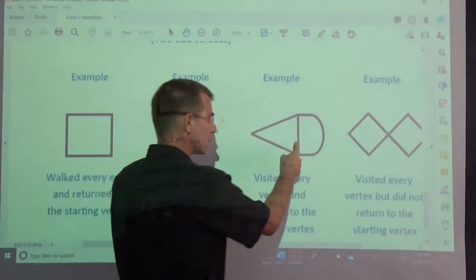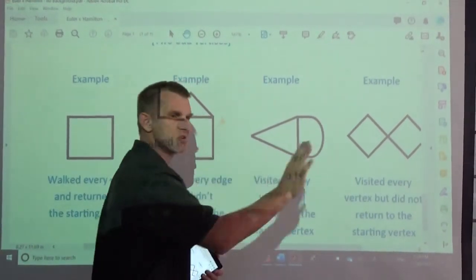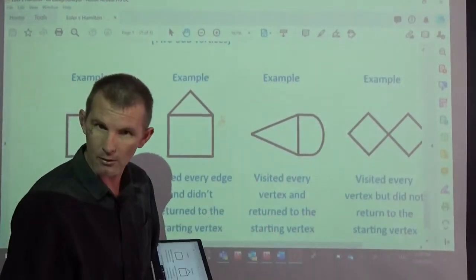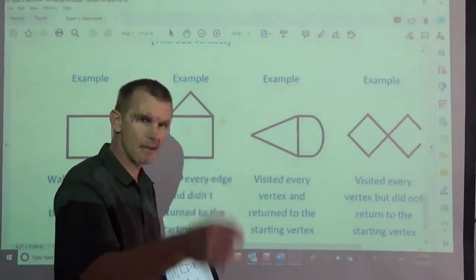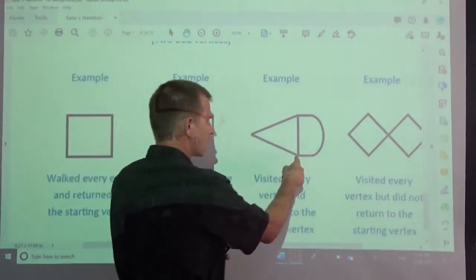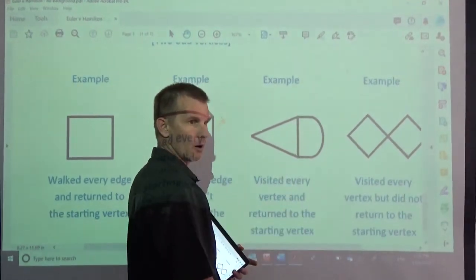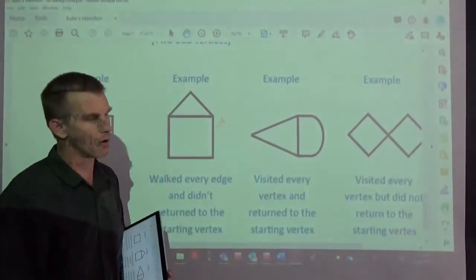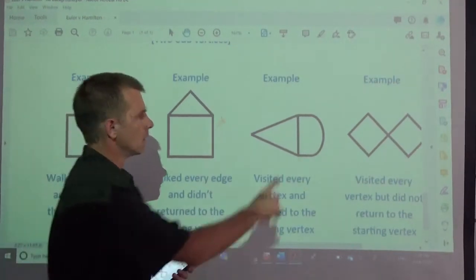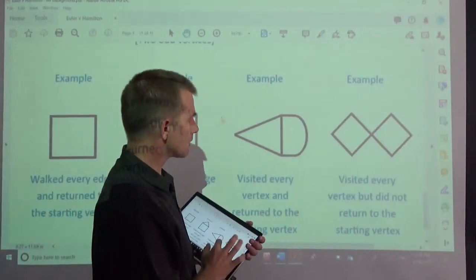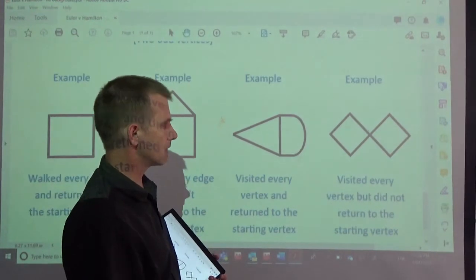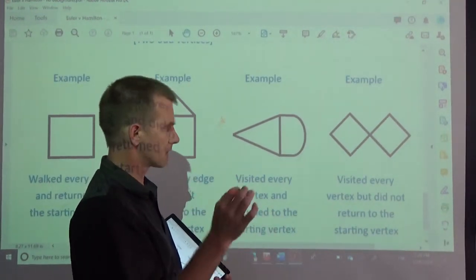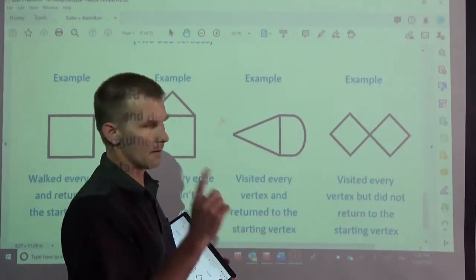You might say, but you didn't go along that guy there. Doesn't matter. I don't have to go along everyone. I just can't repeat any. So you could have gone and that would be fine as well. Similarly, you could start at any of these vertices. Would work fine, no problems at all. This one on the end visit every vertex but did not return to the starting vertex.